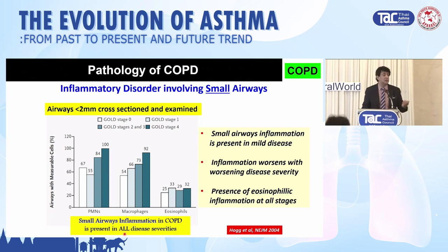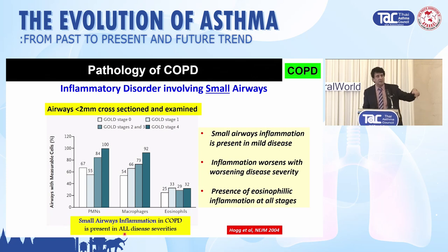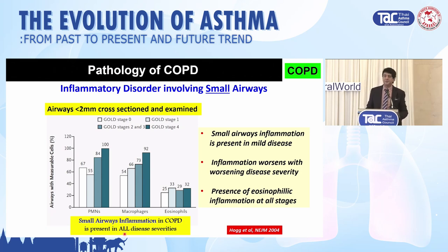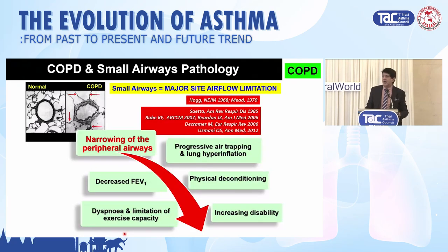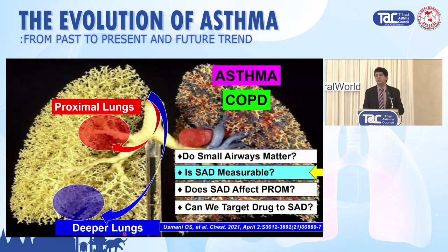It's in the new GOLD 2023 Directive. GOLD zero — the old stage — has come back into fashion now because we have early COPD, pre-COPD, and also PRISM — preserved ratio impaired spirometry. Three new areas in the GOLD Directive. Disease of the small airways leads to air trapping, hyperinflation, decreased FEV1, deconditioning, disability, dyspnea, and eventually death. So small airways disease is very important in asthma and in COPD.